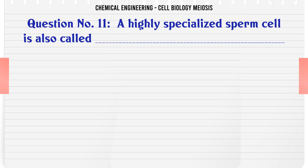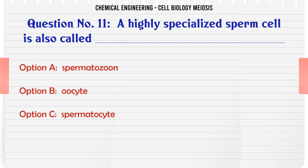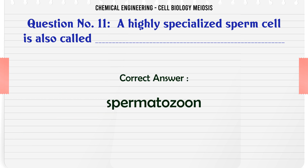A highly specialized sperm cell is also called: A. Spermatozoon. B. Oocyte. C. Spermatocyte. D. Spermatid. The correct answer is Spermatozoon.